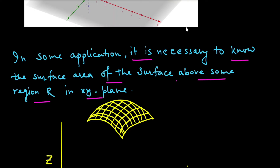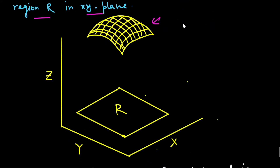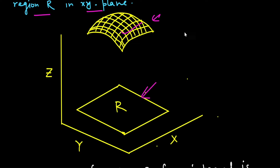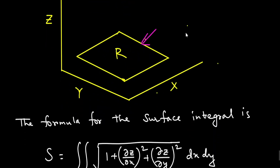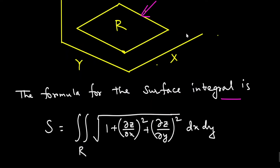Suppose this is the surface in xyz space and this is the corresponding region R in the xy plane. We find the surface area of this region, which equals the surface above it. The formula for this surface integral is: S = double integral over R of √(1 + (∂z/∂x)² + (∂z/∂y)²) dx dy.